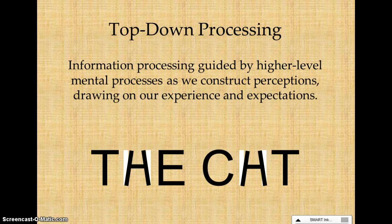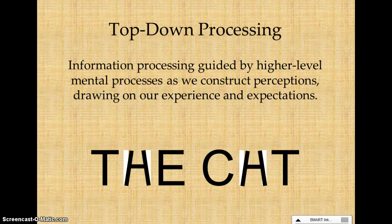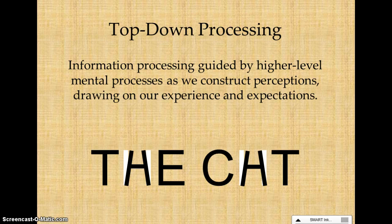Top-down processing relies on schemas, experiences, and expectations — that's what's at the top. You work down to the elemental stimuli to confirm whether you're right. A classic example: you can read 'THE CAT,' but closer analysis reveals the two middle letters are actually the exact same stimulus. Because your experience with English leads you to expect a vowel between two consonants, you interpret it as an 'H' in 'THE' and an 'A' in 'CAT.'